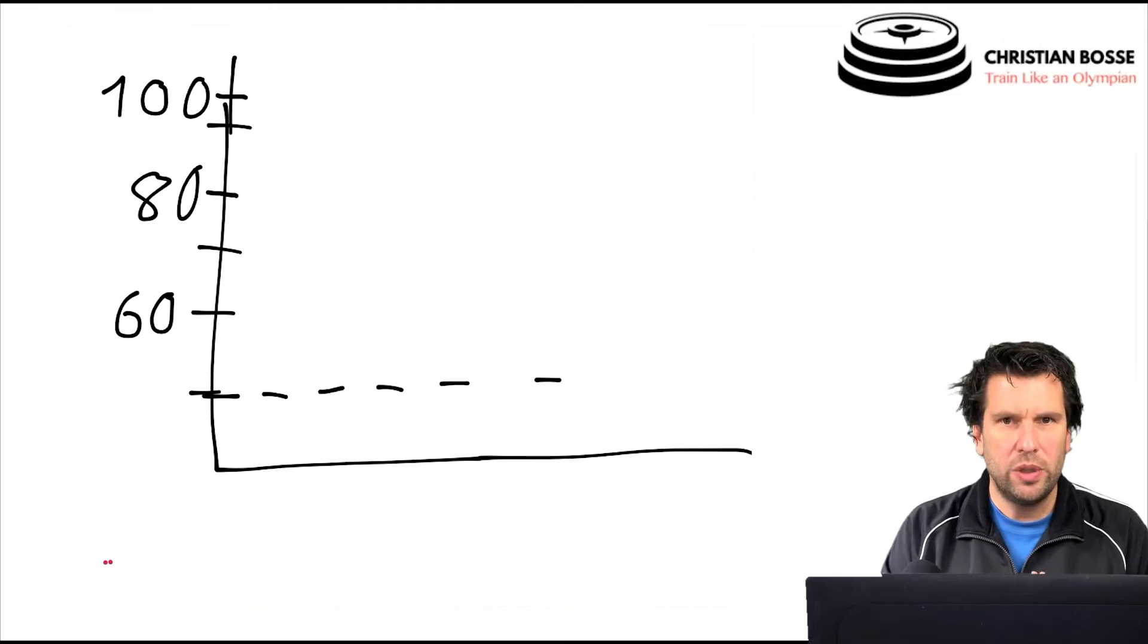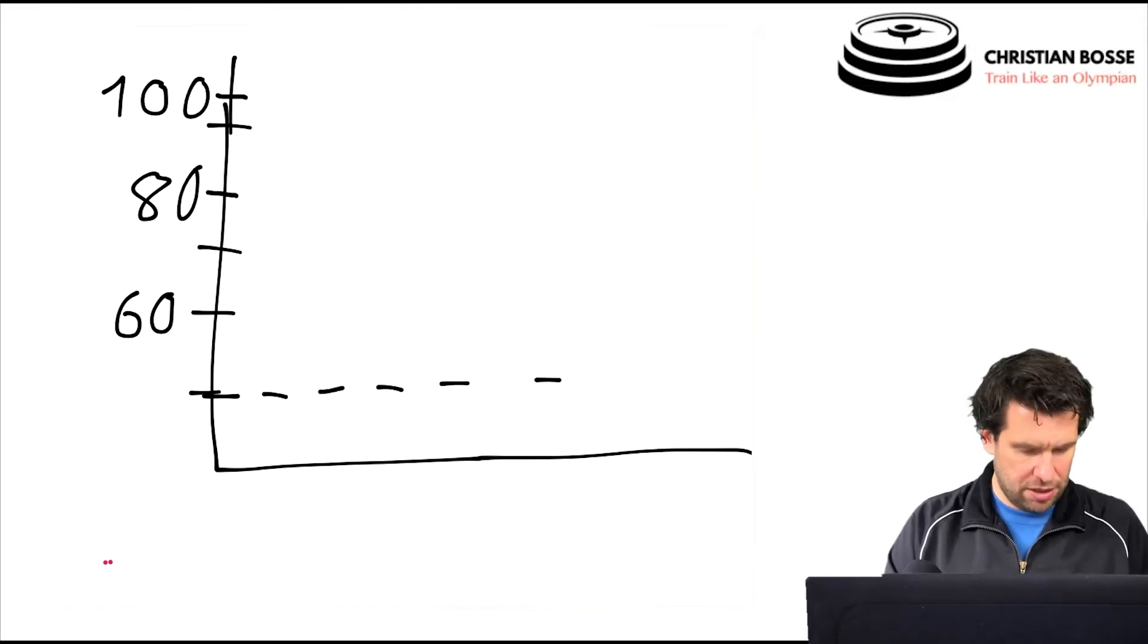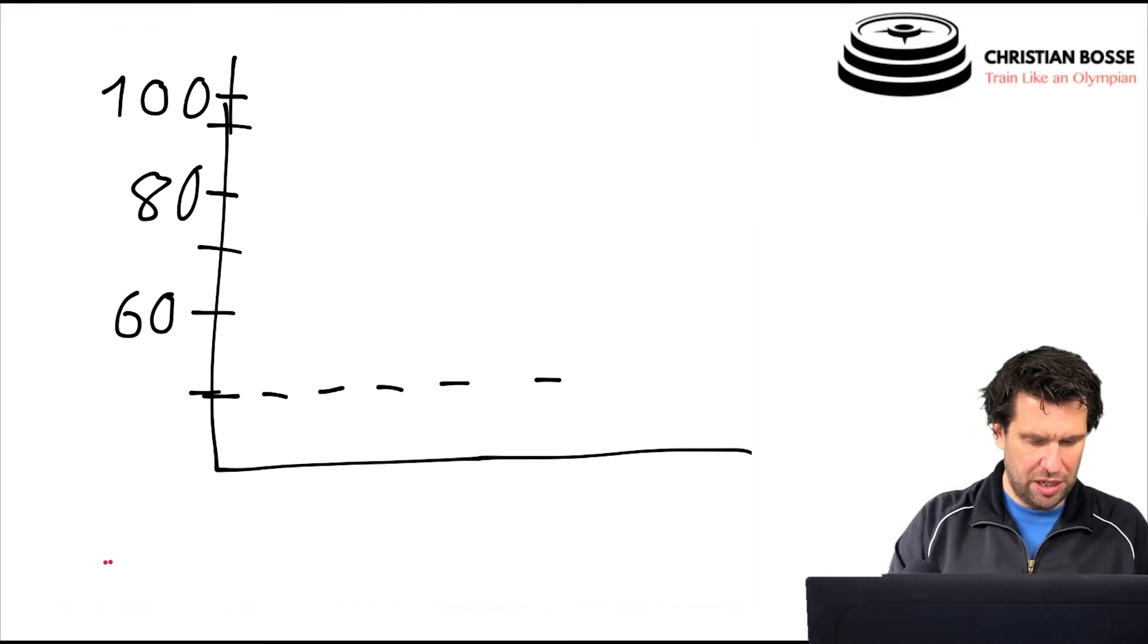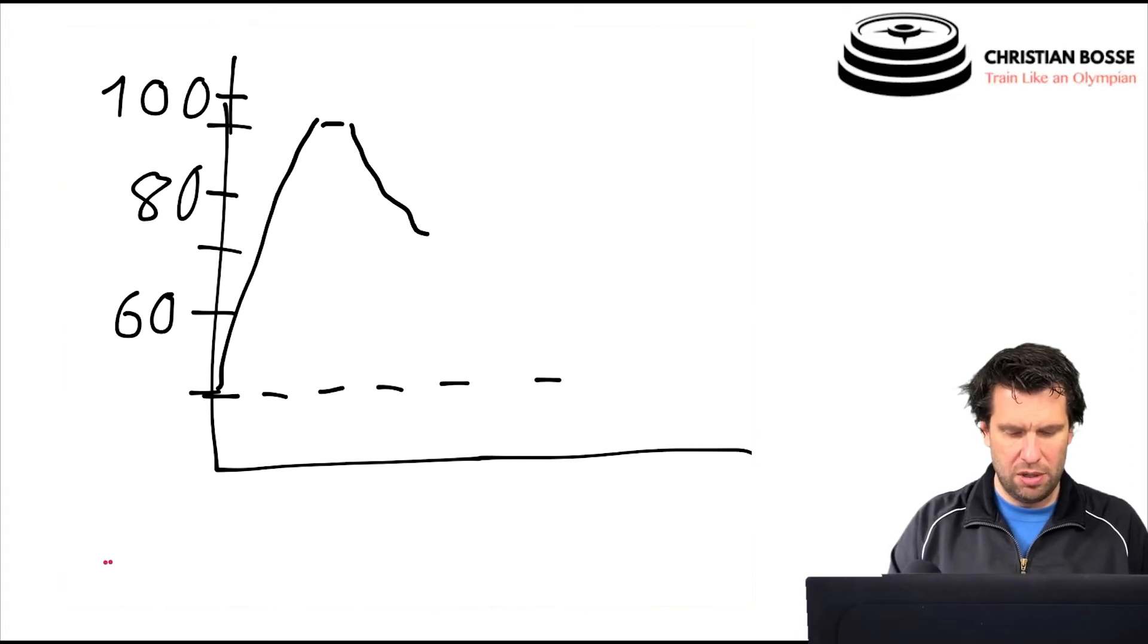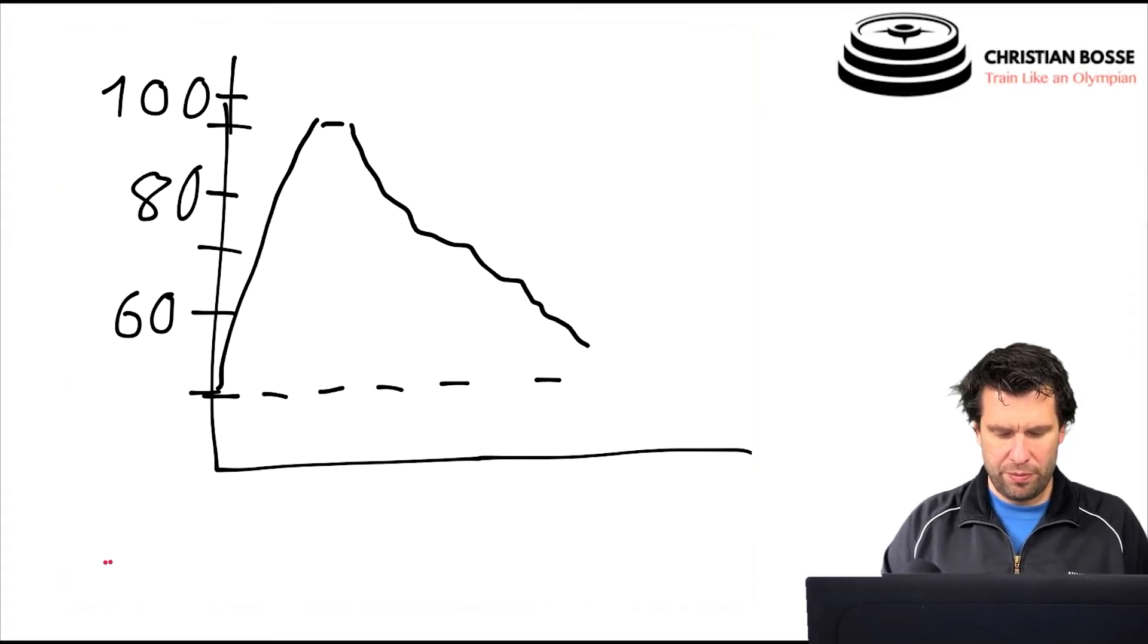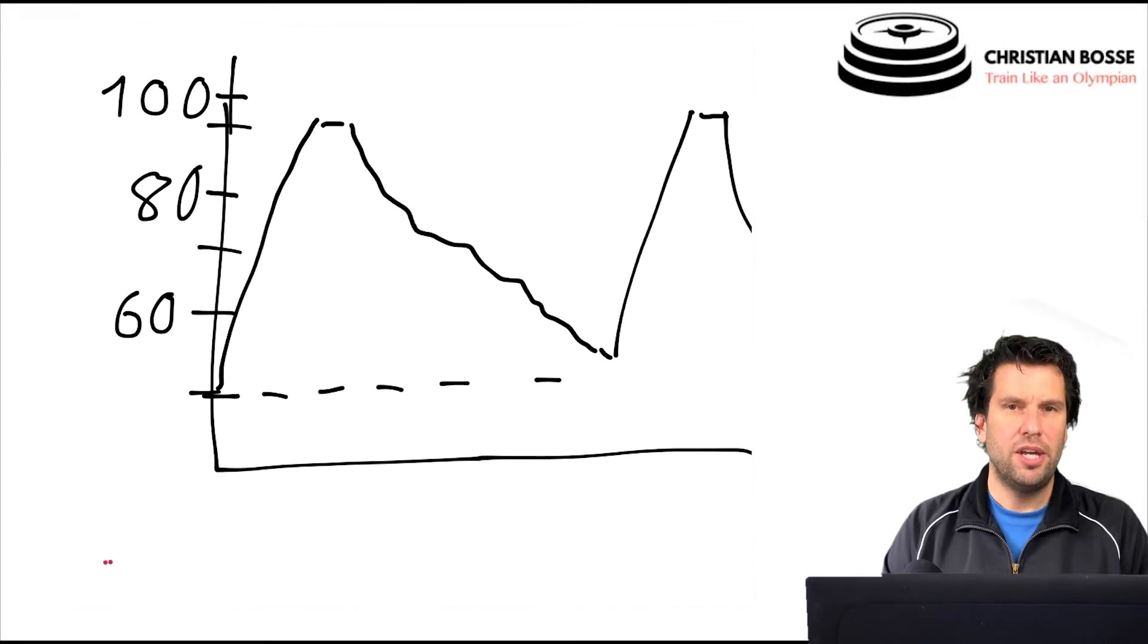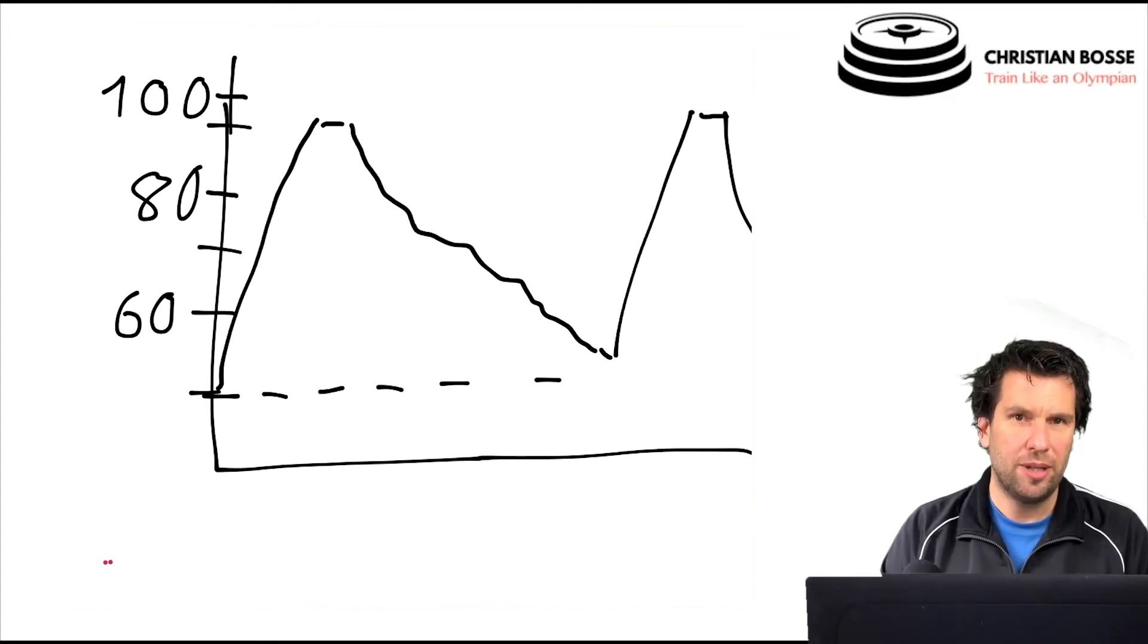And again, here we can play around with the intensities. So if it's a bit more intense, you want to work up to 90% and then hold this 90% for 30 seconds, whatever that might be. And then you allow for complete rest. And then you go again and repeat that. So that's essentially what the repetition method is.